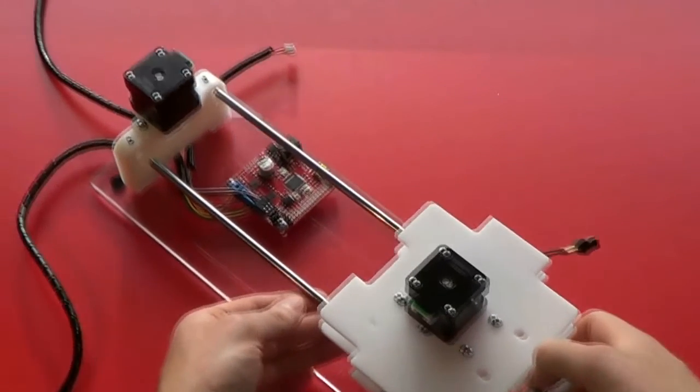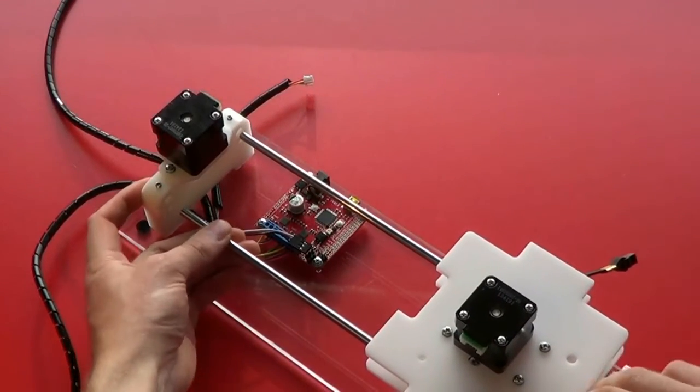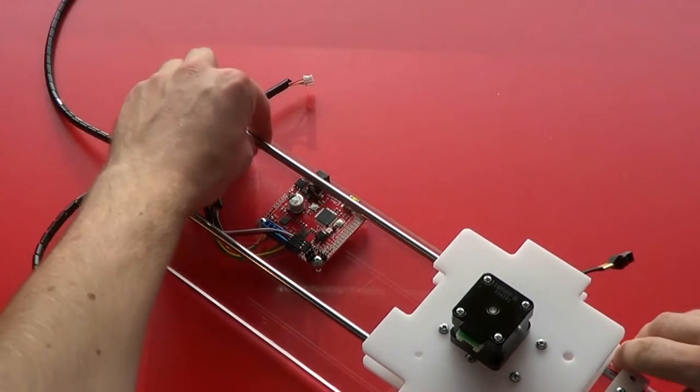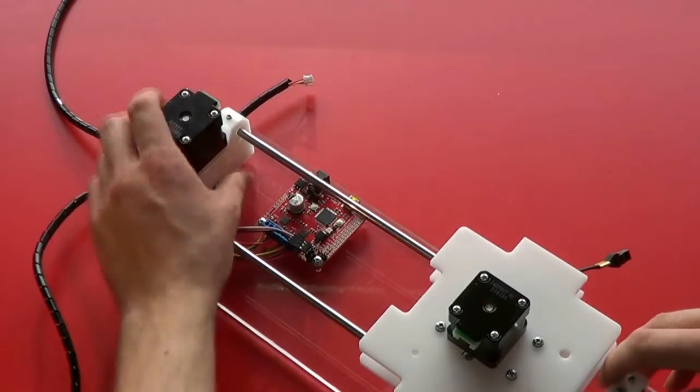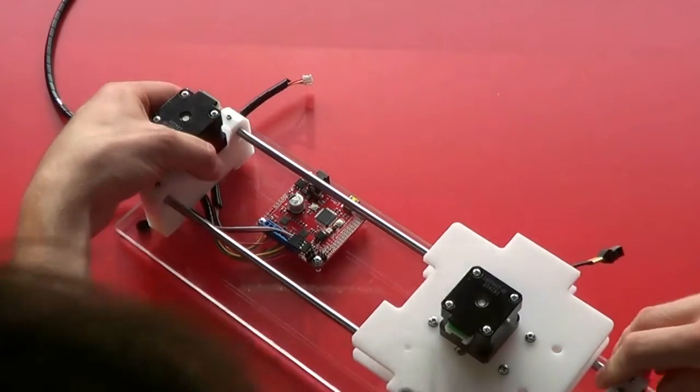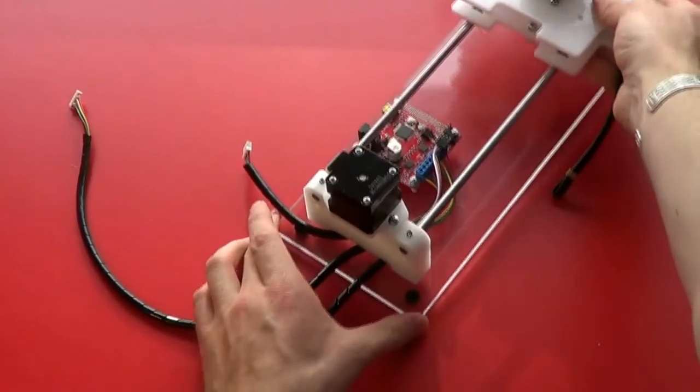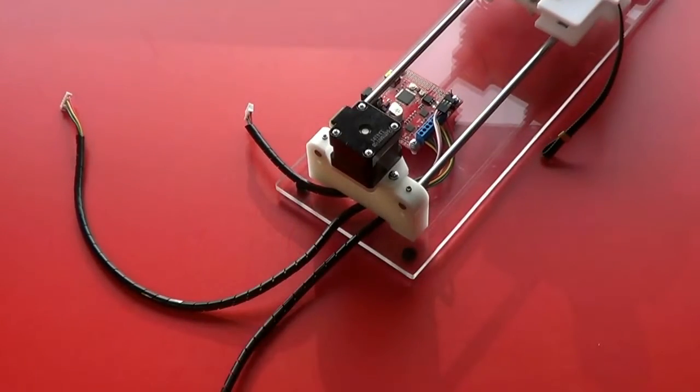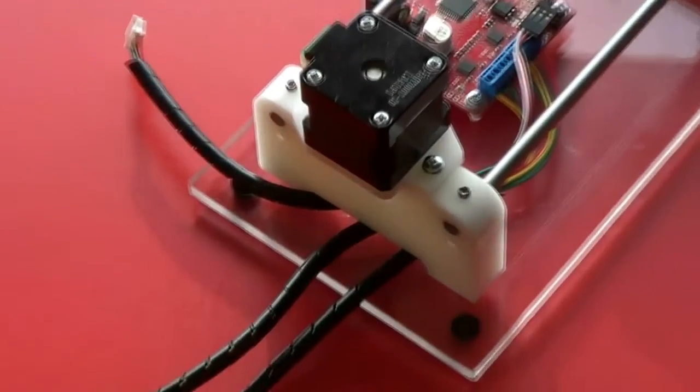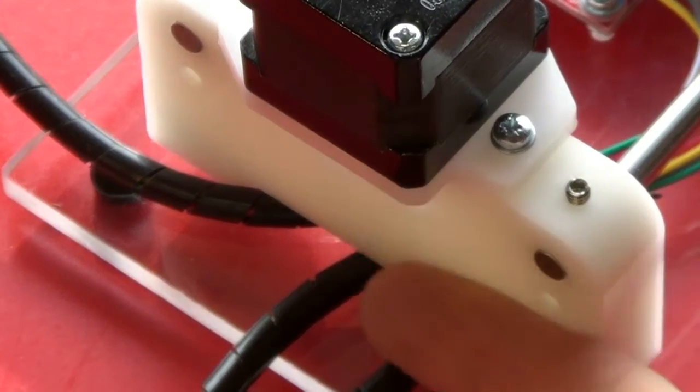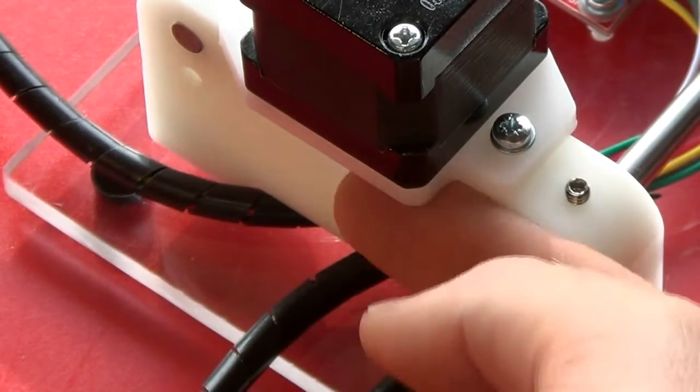At the other end, we want the rails to be flush with the surface of the support block. I'll get a close-up shot of that just now. So we want the rails flush with this left-hand side of the support block.